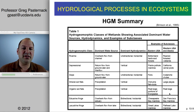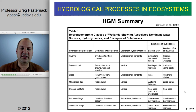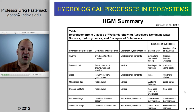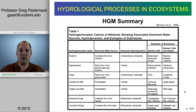This is a summary from the Brinson et al. 1995 document showing seven HGM classes. You can see the class, the water source, the hydrodynamics, and then examples from the eastern and western United States. The hydrogeomorphic classes have some similarity to the Cowardin system, but you do see differences — like having a mineral soil flat versus an organic soil flat, which is not in the Cowardin system.